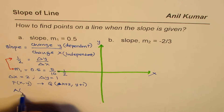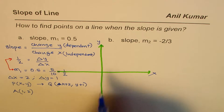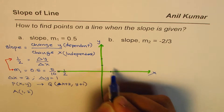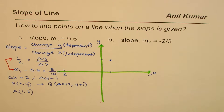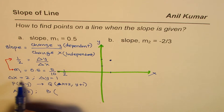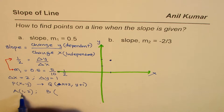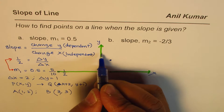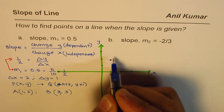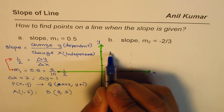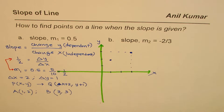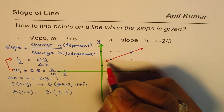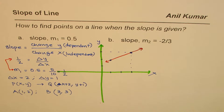Let's take a specific example. Let point A be (1, 2) — one along the x-axis and two along the y-axis. Since we need to increase the x value by 2, one plus two is 3, and increase the y value by 1, so that gives us 3. Point B is therefore (3, 3) — three units across and three units up.